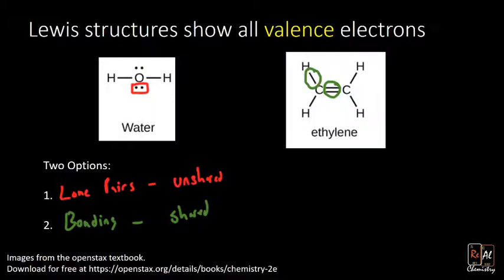There are lone pairs on water. How many lone pairs on water? Two. There's one lone pair, and there's two lone pairs. So we can count lone pairs, and we always recognize them as the dots that are hanging out around an atom, and they're unshared.